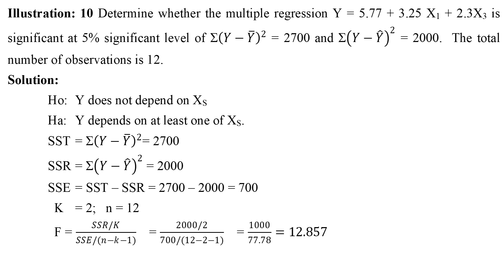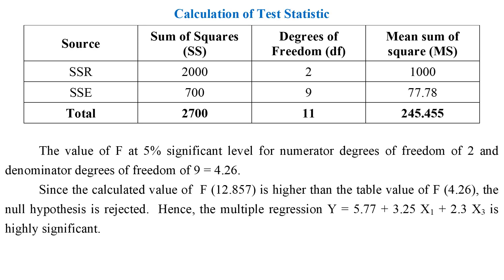Illustration 10: Determine whether the multiple regression ŷ = 5.77 + 3.25x1 + 2.3x3 is significant at 5% significance level. SST = 2700, SSR = 2000, SSE = 700, k = 2, n = 12. The table value of F for numerator d.f. = 2 and denominator d.f. = 9 is 4.26. Since the calculated F (12.857) is higher than the table value (4.26), the null hypothesis is rejected. Hence, the multiple regression is highly significant.